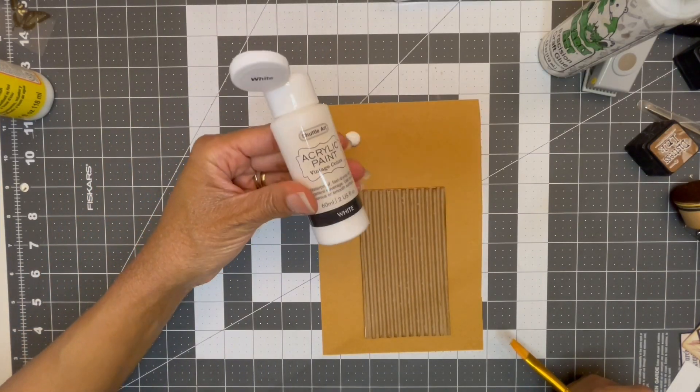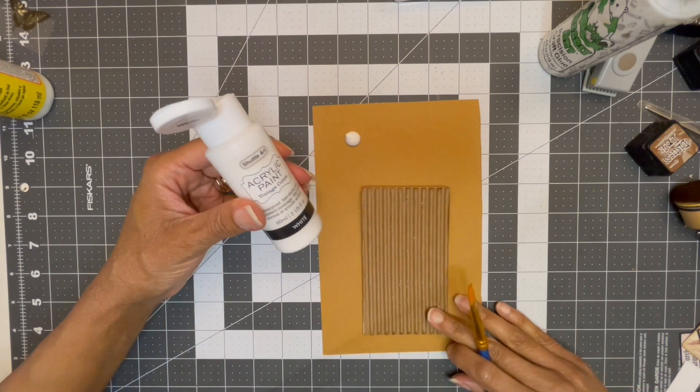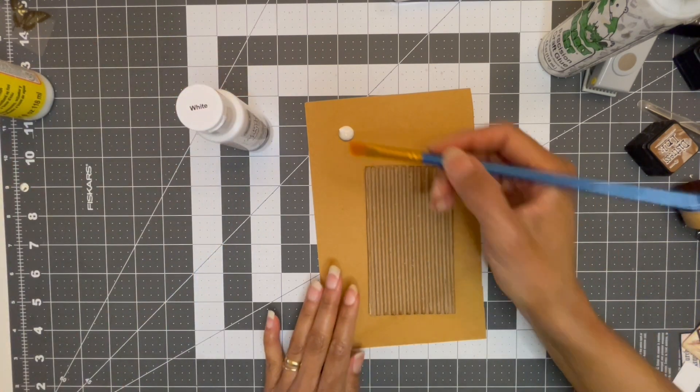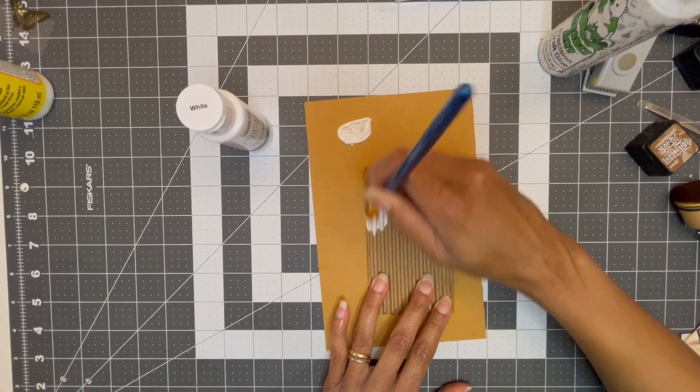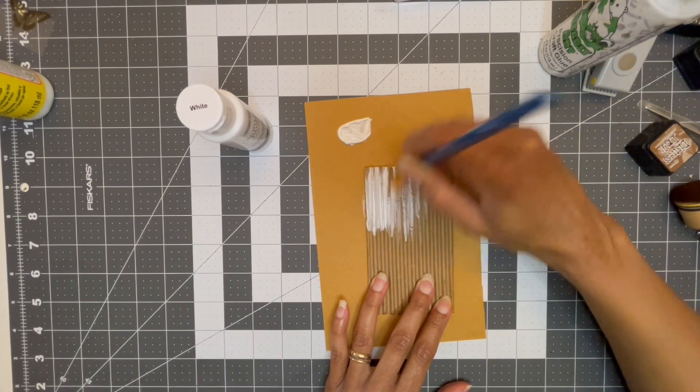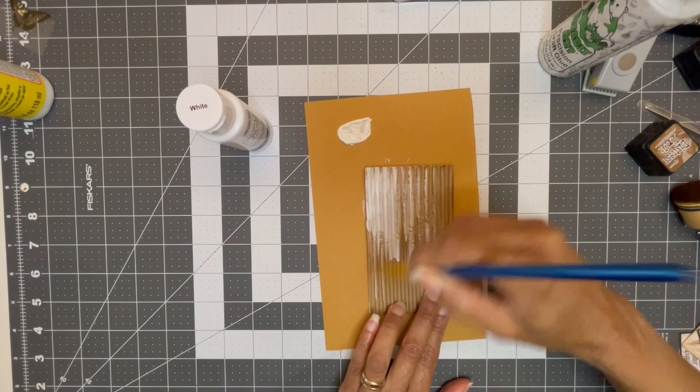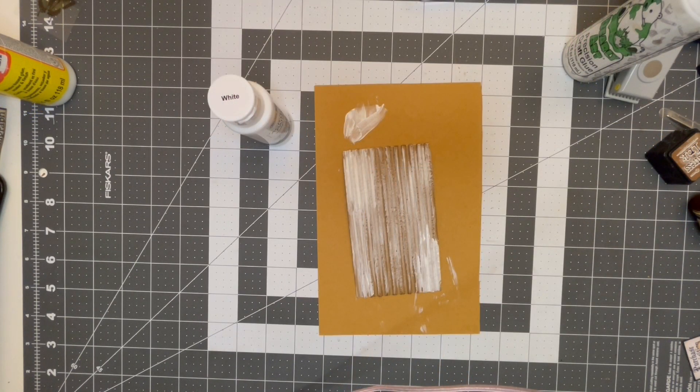I'm using some acrylic white paint and I'm just going to paint onto the corrugated board. I'm going to let this dry and then I'll do another layer. I don't want to make it too wet because I don't want things to start warping.